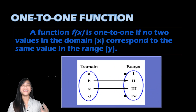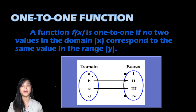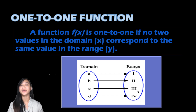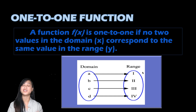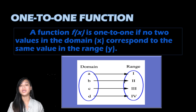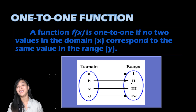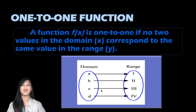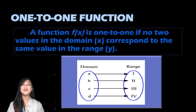Let's have this example of mapping. We have the domain with values a, b, c, and d, and the range with Roman numerals one, two, three, and four. So a corresponds only to one, b corresponds only to two, c corresponds to three, and d corresponds to four.